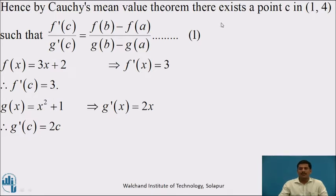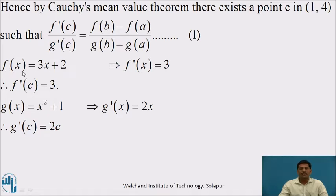Hence, by the theorem, there exists a point c in the open interval (1, 4) such that f'(c) / g'(c) = [f(b) - f(a)] / [g(b) - g(a)]. Now to find such a point c, we have to calculate all these six quantities. We have f(x) = 3x + 2. Differentiating, we get f'(x) = 3, since the derivative of 3x is 3 and the derivative of 2 is 0.